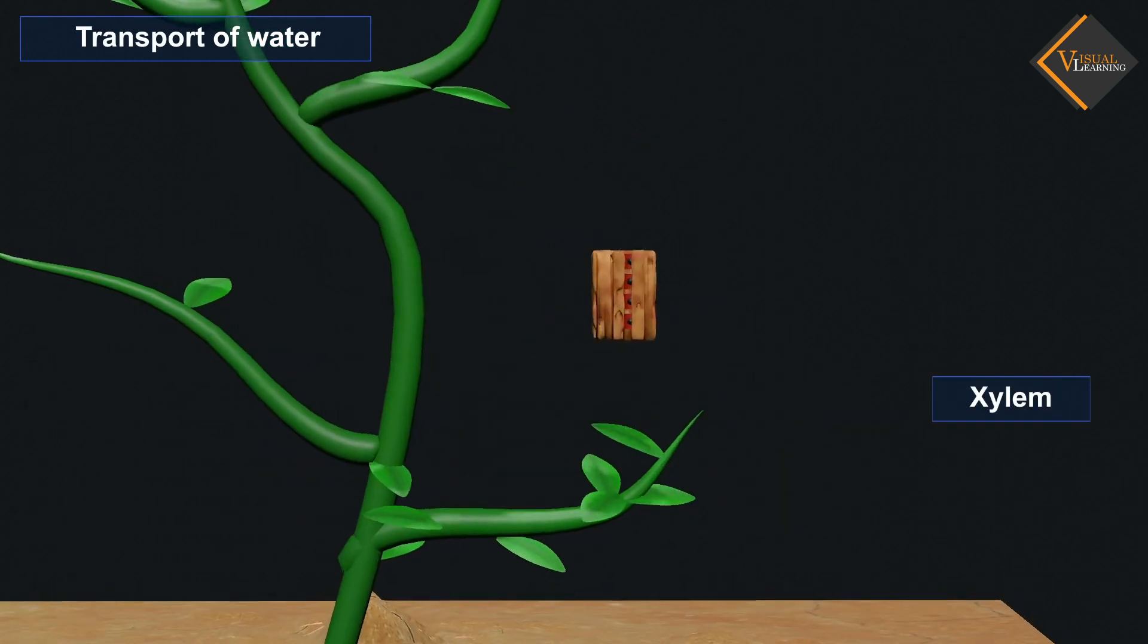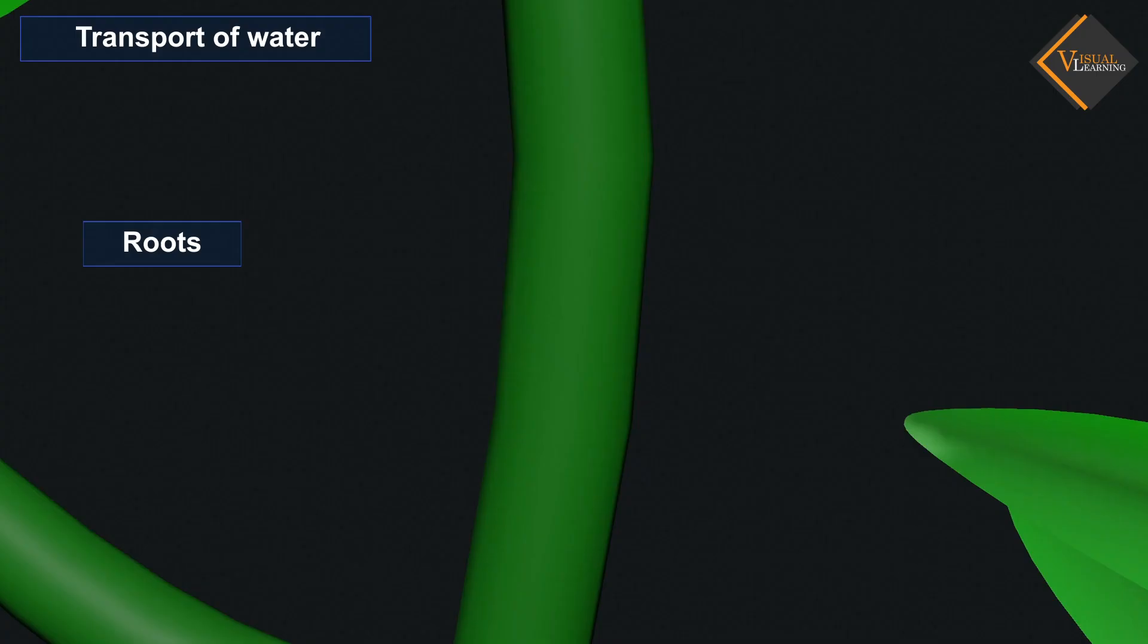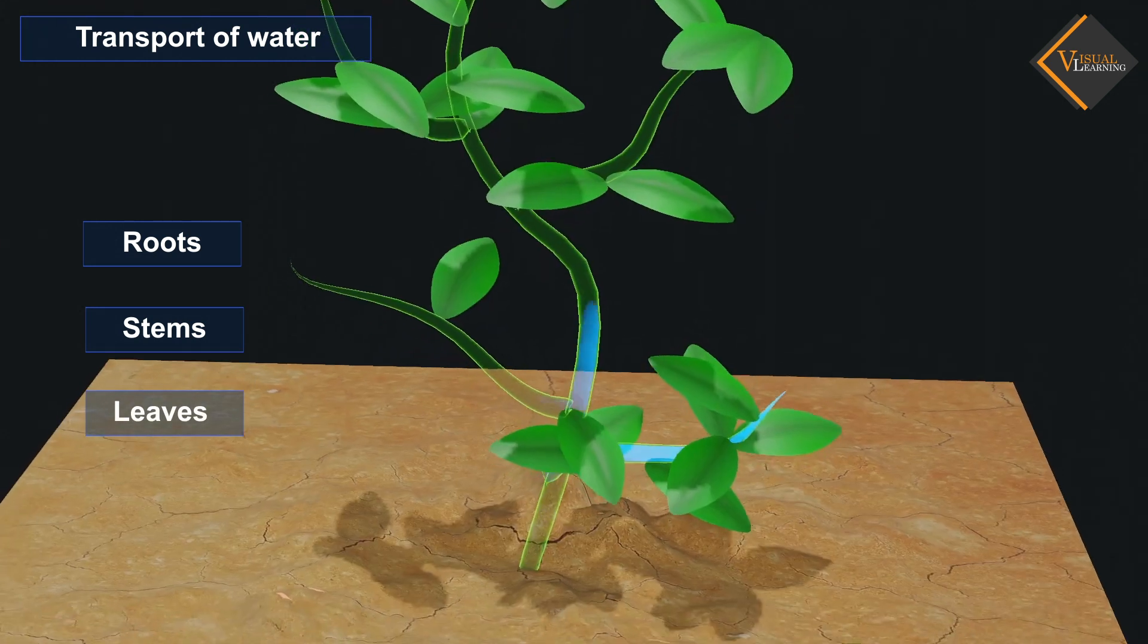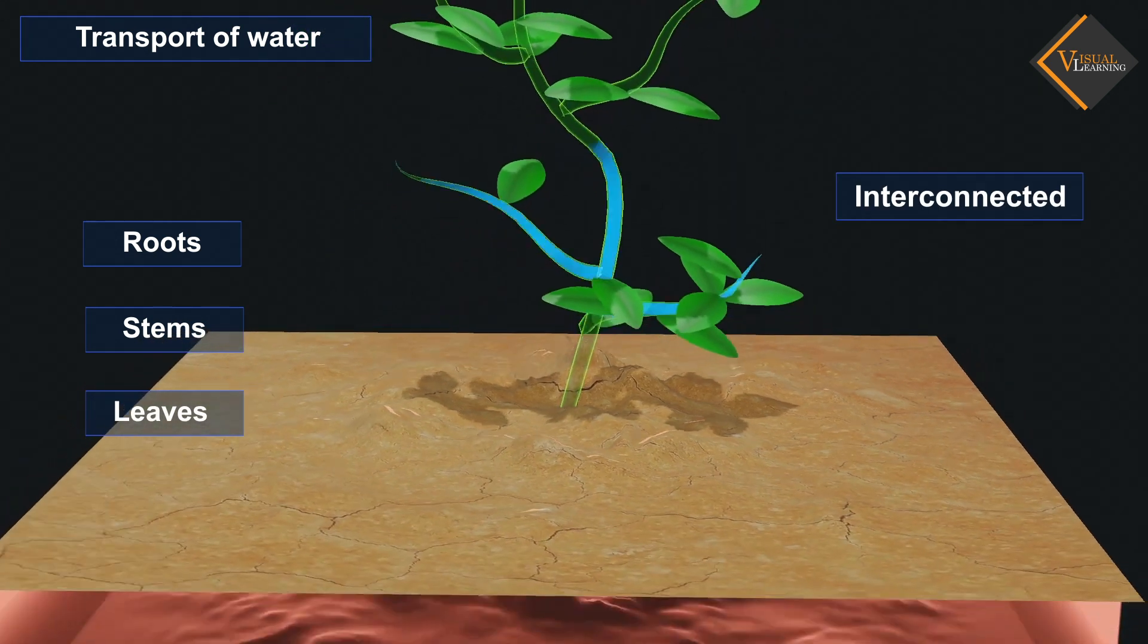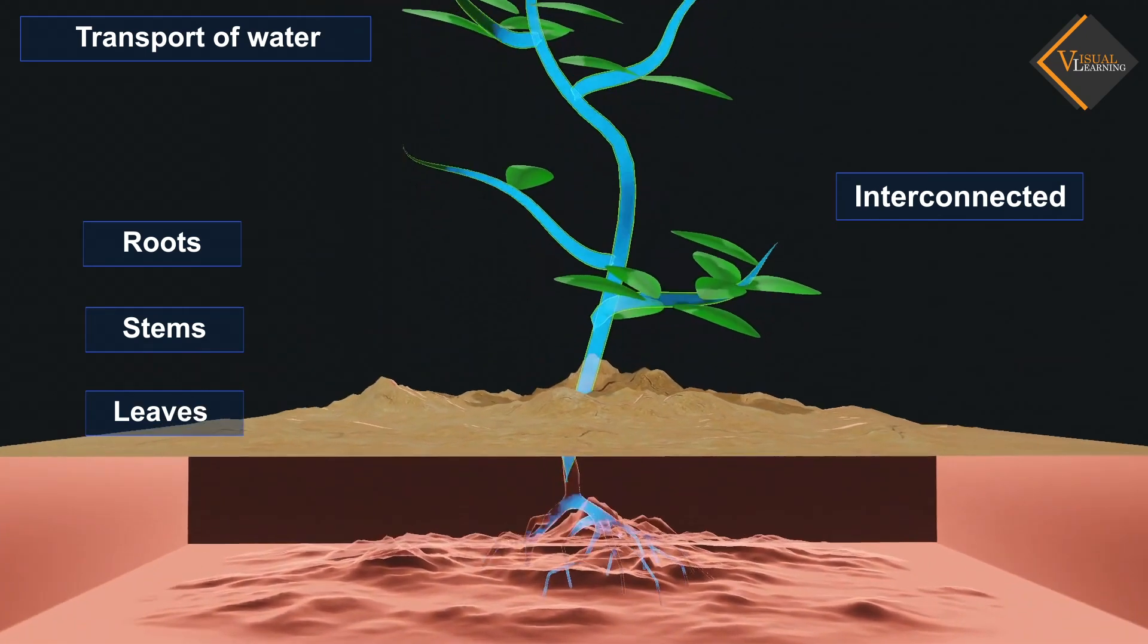In xylem tissue, vessels and tracheids of the roots, stems, and leaves are interconnected to form a continuous system of water-conducting channels reaching all parts of the plant.